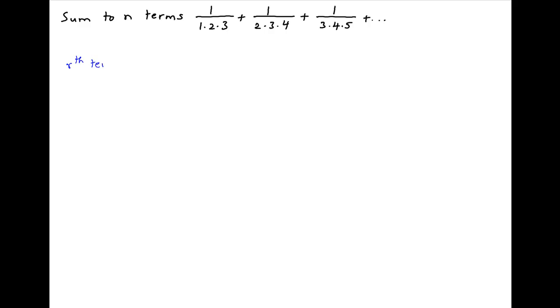The general term, or the rth term of the given series, let's denote it by ur, is equal to 1 upon r times r plus 1 times r plus 2.